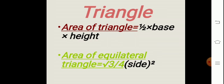Triangle. The area of a triangle is equal to half into base into height. And the area of an equilateral triangle is equal to (√3 / 4) into side squared.